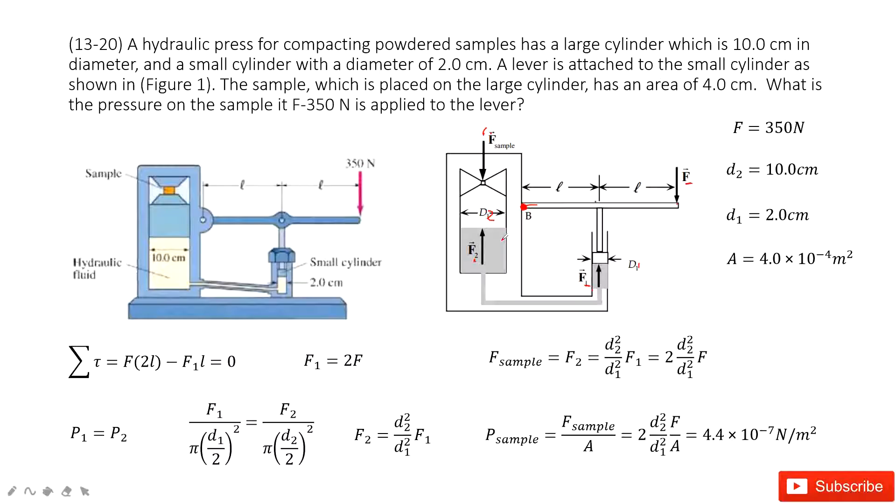The pressure is the force divided by cross sectional area. So P1 must equal to P2. P1 is F1 divided by pi R1 squared. P2 is F2 divided by pi R2 squared.